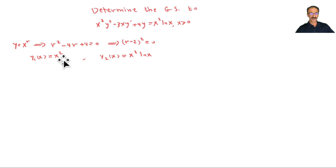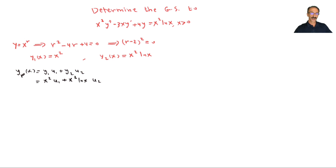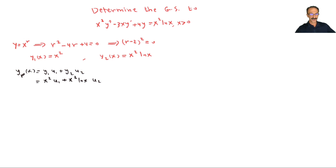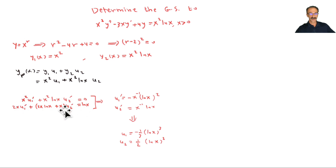For the repeated root r = 2: y₁ = x² and y₂ = x²·ln(x), giving the complementary solution yc. For yp we use variation of parameters: yp = u₁y₁ + u₂y₂. We know y₁ and y₂ but need u₁ and u₂, so we apply Cramer's rule as in the previous section.